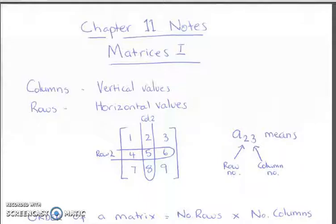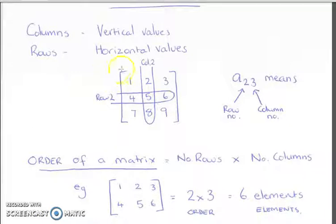A matrix is the square or rectangular brackets with numbers inside. The columns are the vertical values, rows are the horizontal values. We can say a specific location by saying row number first and then column number second. For example, row 2 and then column 3 would be number 6.